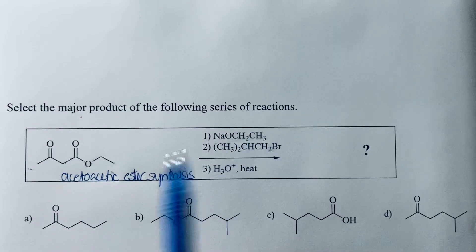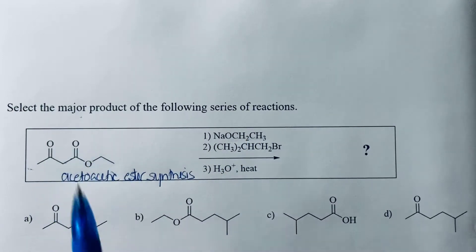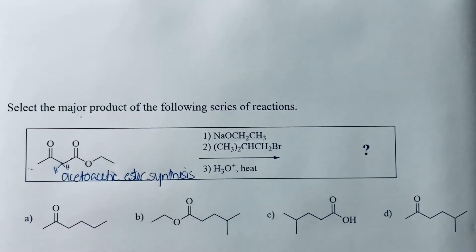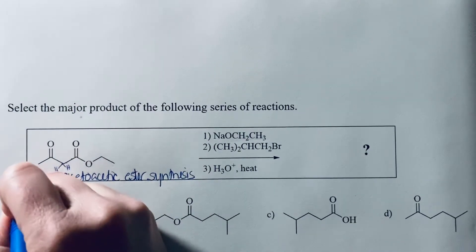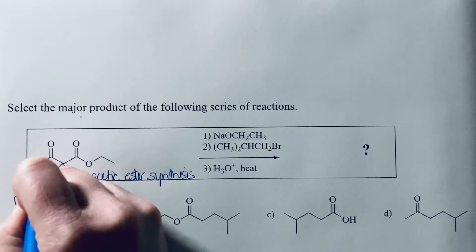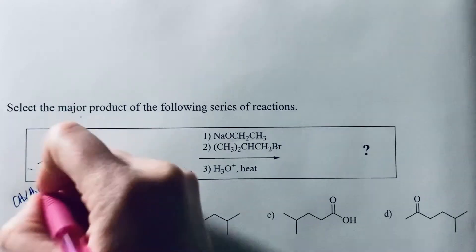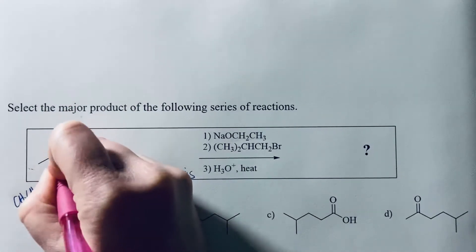So what this is going to do is it's going to react with the most acidic hydrogen. The most acidic hydrogen would be alpha to the carbonyl. Specifically, it's going to be the ones in between the two carbonyls because you're going to have resonance with both of those. So the first thing that's going to happen is your ethoxide is going to remove one of these two protons, giving you the enolate.